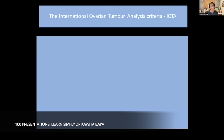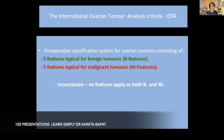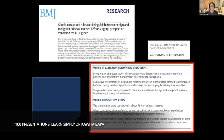The IOTA criteria for pre-operative classification of ovarian tumors consist of five features typical for benign tumors — called B features — and five features typical for malignant tumors — called M features. If no features apply, or both B and M features are present, features are considered inconclusive. Research is ongoing. It is a simple ultrasound ruleset to distinguish between benign and malignant adnexal masses before surgery.